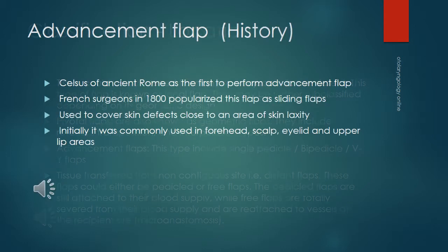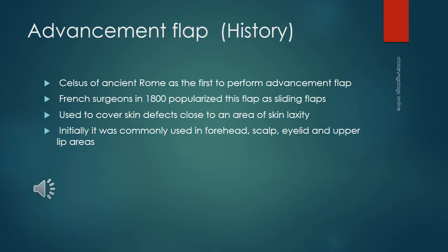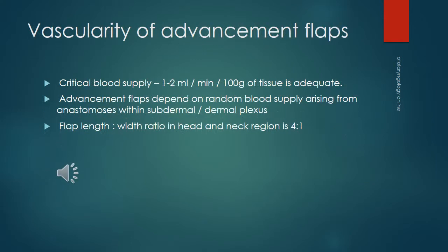Advancement flaps, first conceived by Celsus, were popularized by French surgeons. They are classically used to cover skin defects close to an area of skin laxity, initially in forehead, scalp, eyelid, and upper lip reconstructions. For survival, a critical blood supply of 1 to 2 millilitres per minute per 100 grams of tissue must be maintained. These flaps depend on random blood supply from anastomoses within the subdermal and dermal plexus. In the head and neck area, the flap length-to-width ratio can be 4:1; a broader base improves survival.